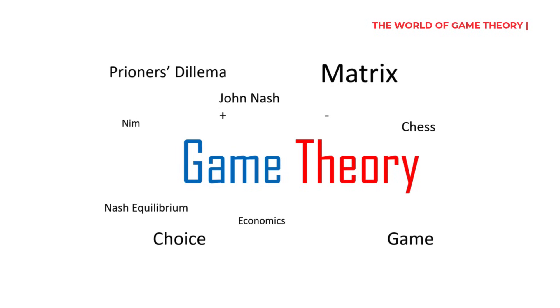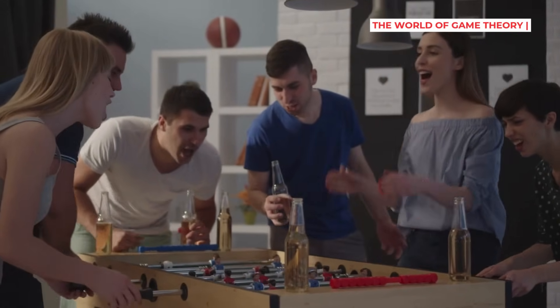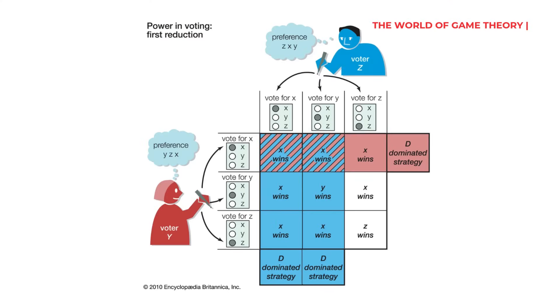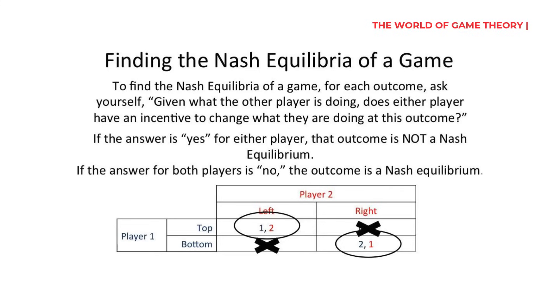What makes up a game in Game Theory? First, we have players — that's you and anyone else making decisions. Then there are strategies: all the possible moves each player could make. Payoffs are what you win or lose depending on what everyone decides. And the exciting part is finding the equilibrium — that perfect balance where nobody wants to change their move because they're already making the best choice they can. What happens when the mathematically perfect decision leads to disaster for everyone involved?